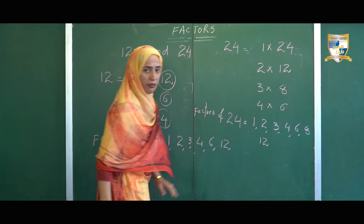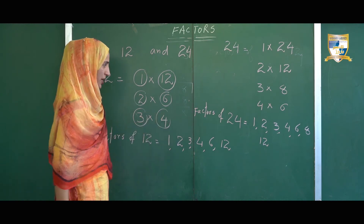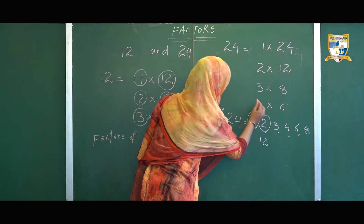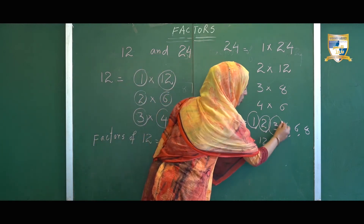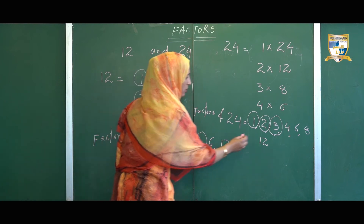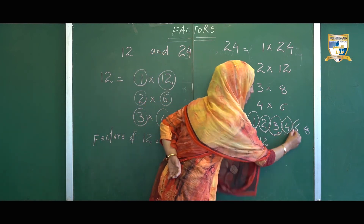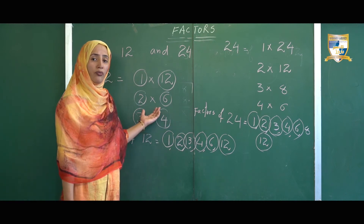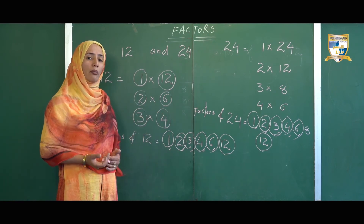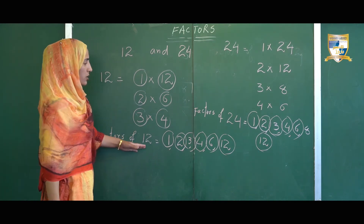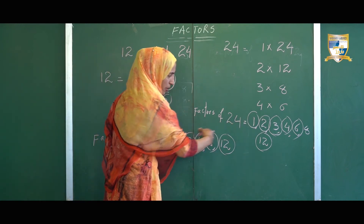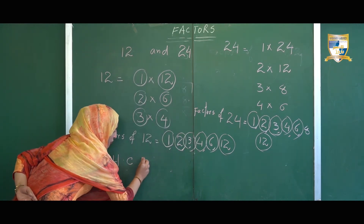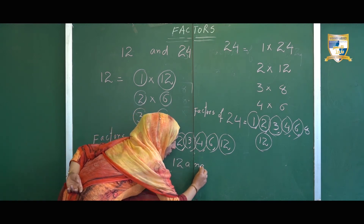Now observe the factors of 12 and 24 carefully. We observe some factors are common to both these numbers: 1 is common to both 12 and 24, 2 is common to both, 3 is common, 4 is also common, 6 is also common, and 12 is also common. These are the common factors of 12 and 24. The highest among all these common factors is 12, so 12 is the highest common factor of 12 and 24.